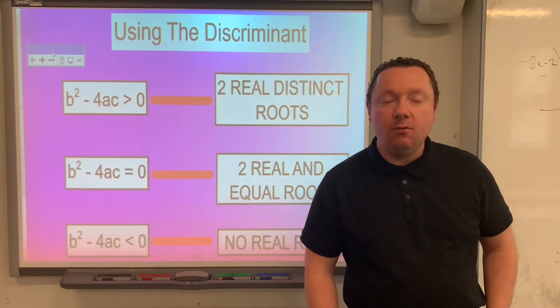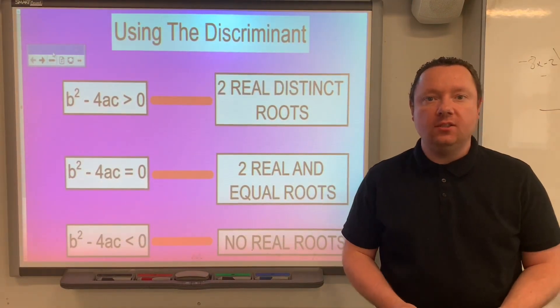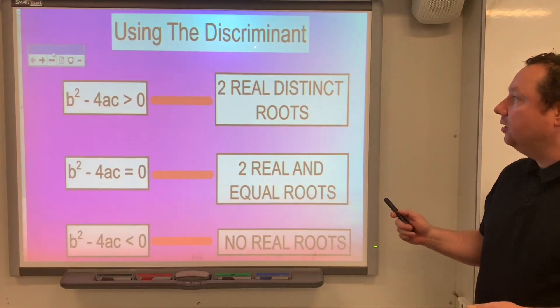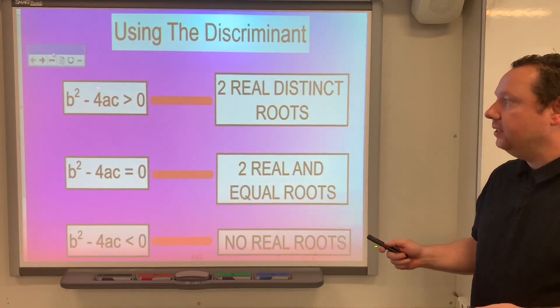Mr Claren here from ClarenMaths. Today we're going to be looking at how to use the discriminant to solve problems. So recall from using the discriminant, this is the discriminant: b squared minus 4ac.